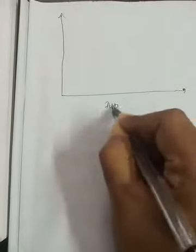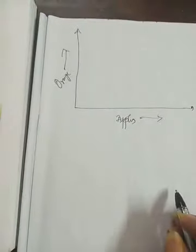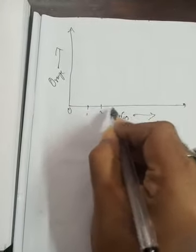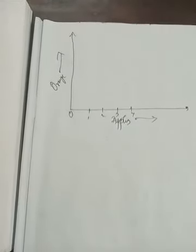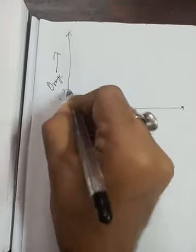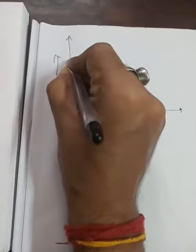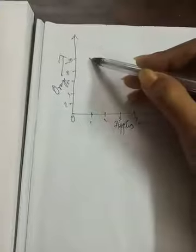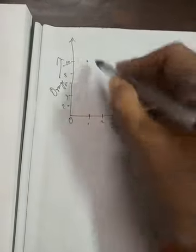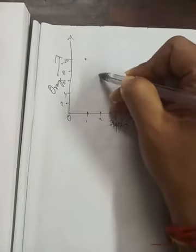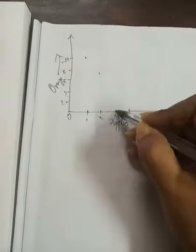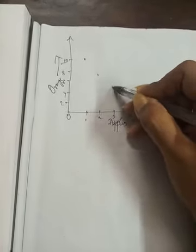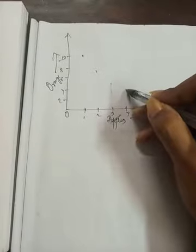Now if we put these points in a diagram, we take apples on the horizontal axis and oranges on the vertical axis. The first combination is point (1,10); the second is (2,7); the third is (3,5); and the fourth is (4,4). We plot each of these combination points on the graph.